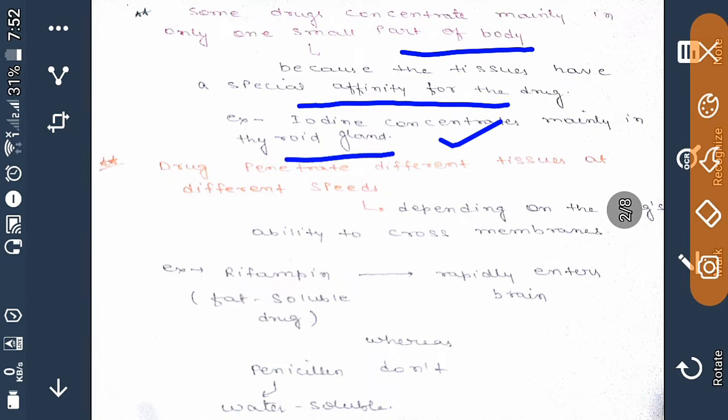There are some drugs which penetrate different tissues at different speeds and it will depend on the drug's ability to cross membranes. So drugs penetrate different tissues at different speeds depending totally on the drug's ability to cross membrane.